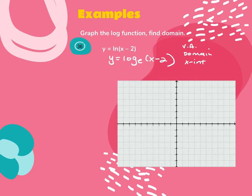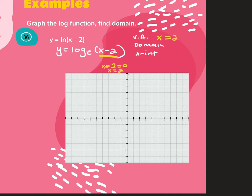Remember a couple of things. Our vertical asymptote comes from what's in the parentheses. If I set that equal to zero — so x minus 2 equals 0 — I get my vertical asymptote at x equals 2. So I've got a vertical asymptote running through x equals 2.